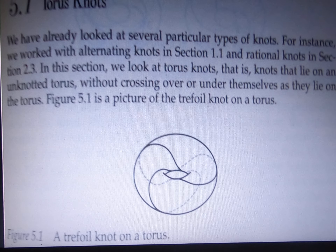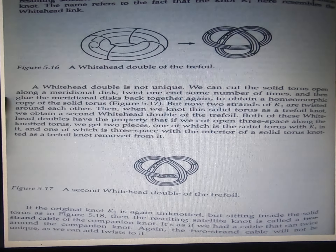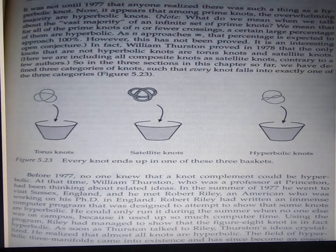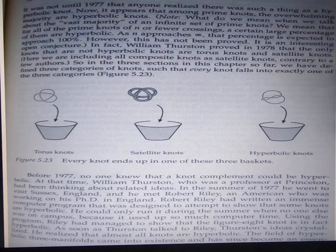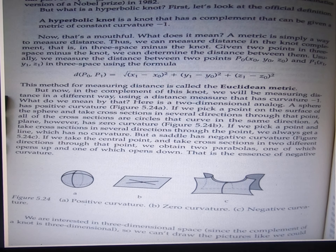Torus knot — the first kind. Satellite knot — the second kind of knot. Hyperbolic knot — all knots belong to these three kinds. The majority are hyperbolic knots, and we will discuss how this works.